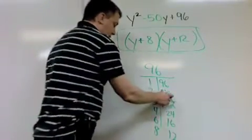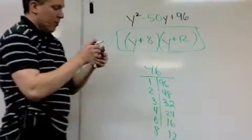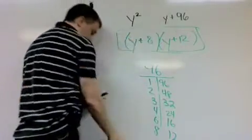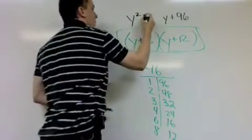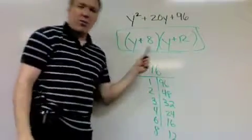But again, all you're doing is finding what multiplies to the last number here and adds to the middle. In this case, it was 20. And those two numbers were 8 and 12. So positive 8, positive 12. y plus 8, y plus 12.